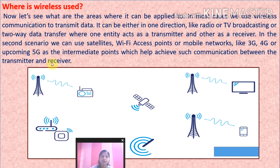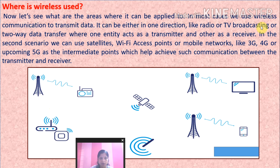We are using many things for wireless communication — mobile communication, TV broadcasting, FM radio — in our daily life. One-way communication means, like with TV or radio, whatever programs are coming we are watching but we are not able to send anything back to that device.